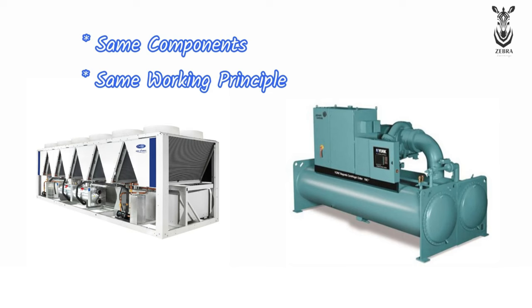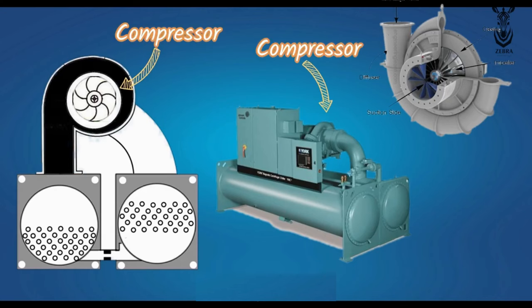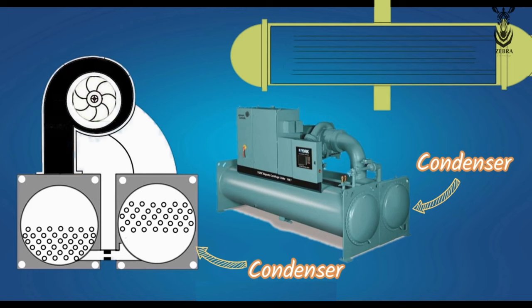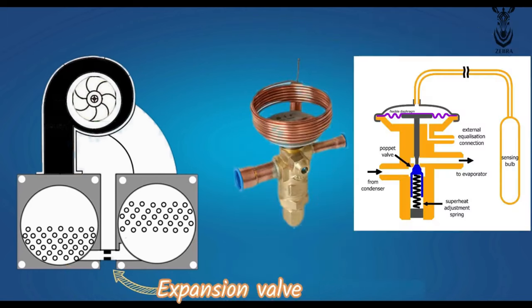Now let's see the main components of the chiller. The main components are: compressor, condenser, evaporator, and expansion valve.